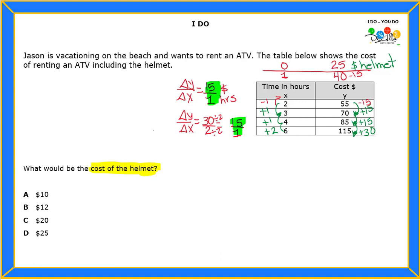So in one hour, how much money did you need to pay? $15, plus the $25 for the helmet — so how much would that be? $40. Isn't that the number we found? In one hour you pay a total of $40 because of the helmet and the $15 per hour. I hope that makes more sense why finding the zero is so important.